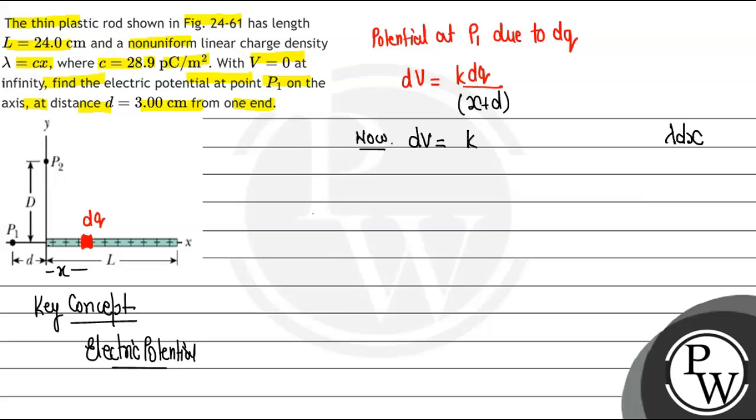So dV is going to be K times lambda, and lambda's value is Cx, dx upon x plus D. So dV we get as, this becomes CK times x dx upon x plus D. This is the potential just due to the dQ component.